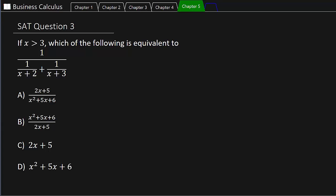Alright, so let's take a look at this one. It says if x is greater than 3 which of the following is equivalent to this thing right here? So we've got the four choices here. So this is not a difficult question. We've got 1 over 1 over x plus 2 plus 1 over x plus 3.